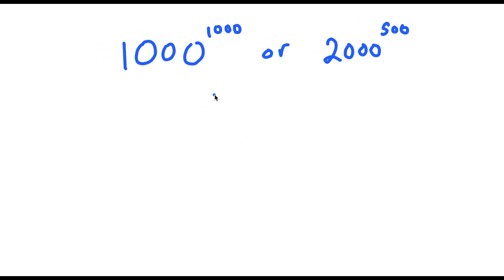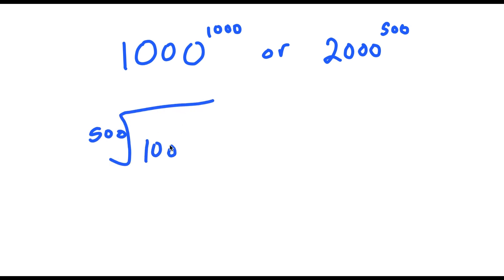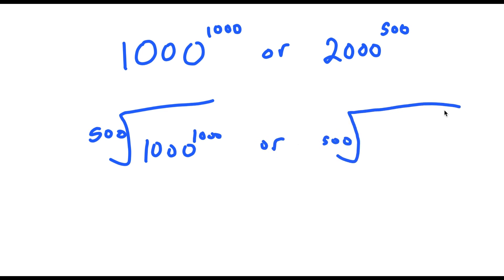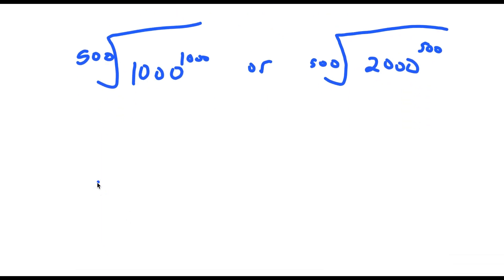To find this out, what I'm going to do is start off by taking the 500th root of both terms. If I have something in the form the nth root of a to the power of m, this is the same thing as a to the power of m over n.